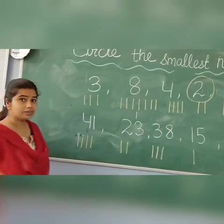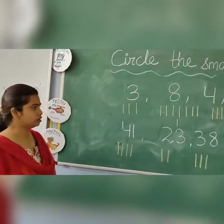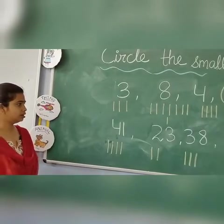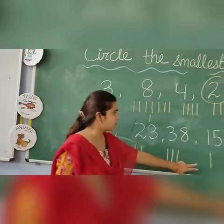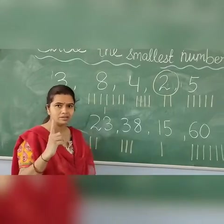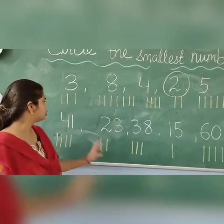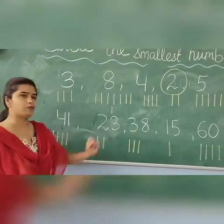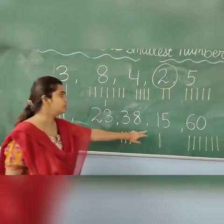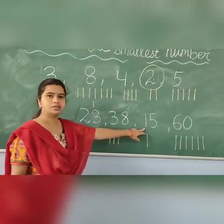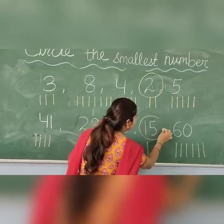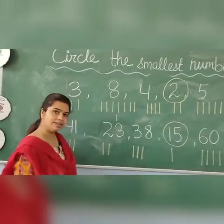Again children, find out which 6 are less in number. Yes, this number of 6 is less in number. 1 is the smallest number. So in this group of numbers, 15 is the smallest number. So I will circle 15 like this.